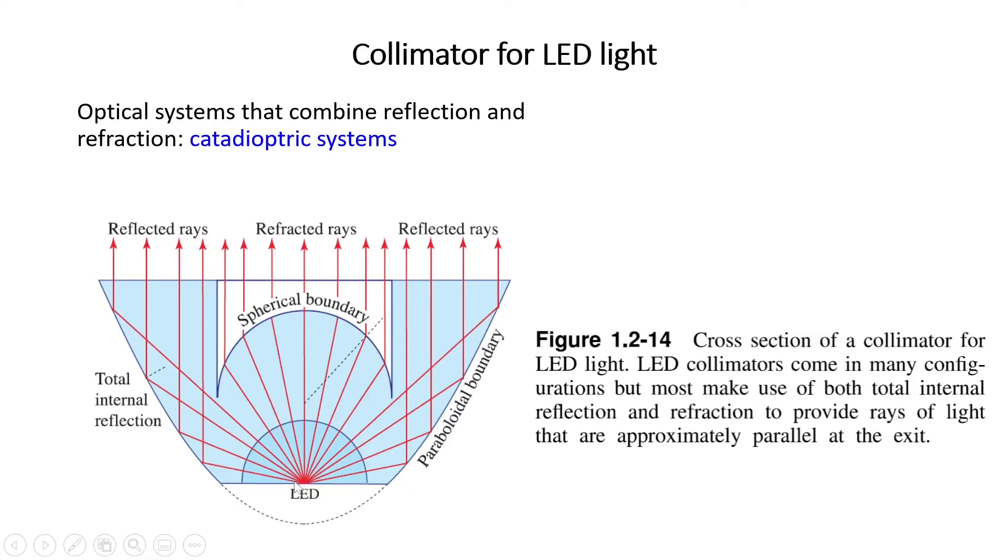The LED light is emitting light. From here, some part is reflected from the paraboloidal boundary. These are reflected rays. And some parts are refracted from the spherical boundary.